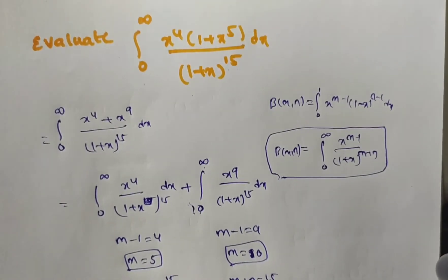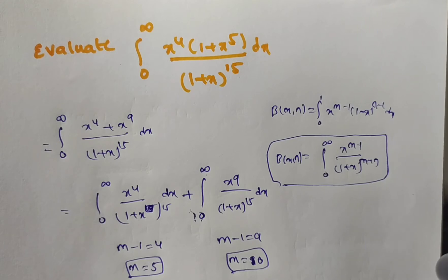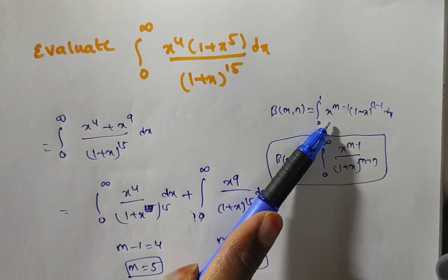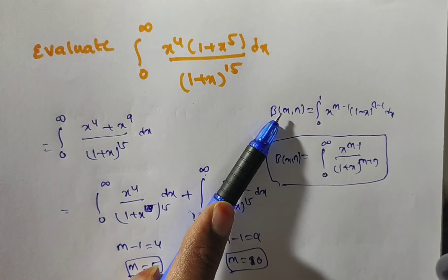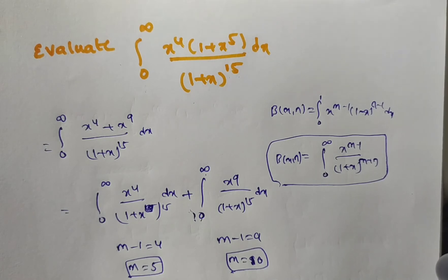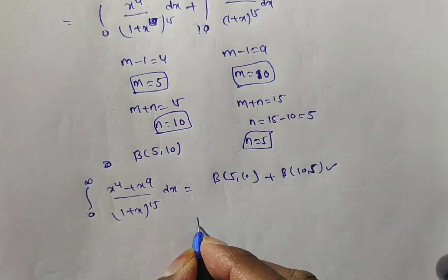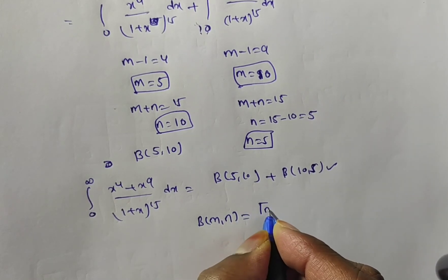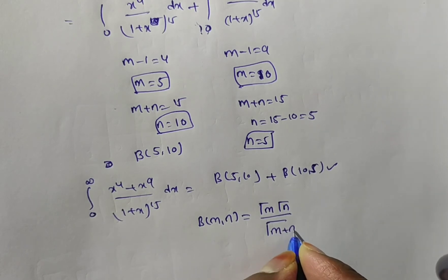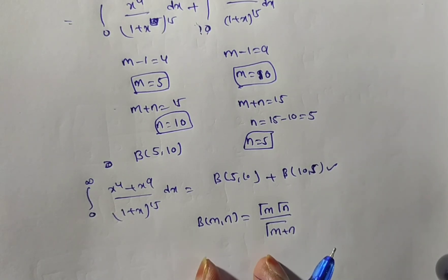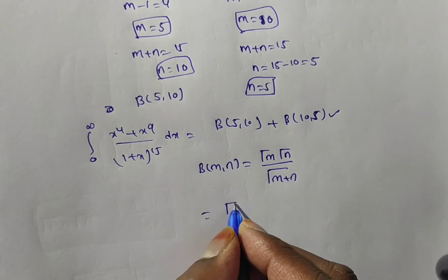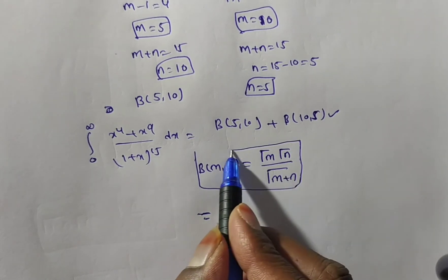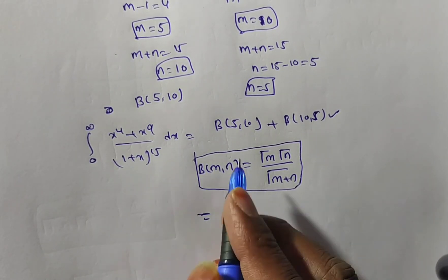Since they ask us to evaluate, we use the relation between beta and gamma functions: Beta(m, n) = Γ(m)·Γ(n) / Γ(m+n). This formula is very important — its proof is very important for exams. Since m and n are integers here, we can apply this directly. So Beta(5,10) + Beta(10,5) = Γ(5)·Γ(10)/Γ(15) + Γ(10)·Γ(5)/Γ(15).